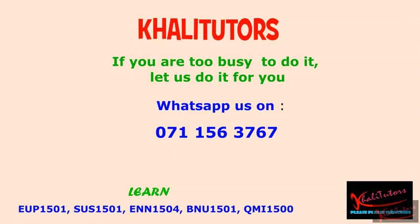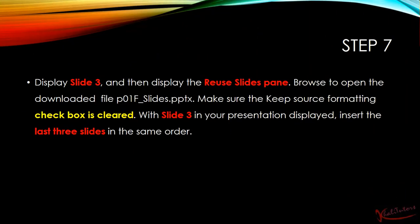Okay, so let's go straight to the instructions for step number seven. It reads as follows: display slide three, then display the Reuse Slides pane, then browse to open the downloaded file p01f underscore slides. Make sure the Keep Formatting checkbox is cleared. With slide three in your presentation displayed, insert the last three slides in the same order.